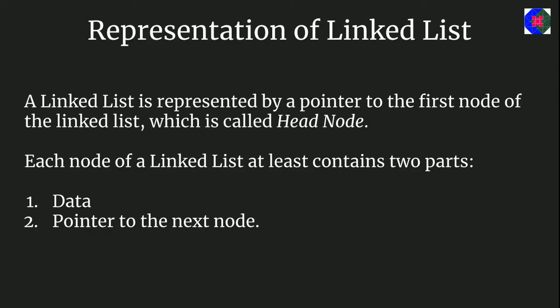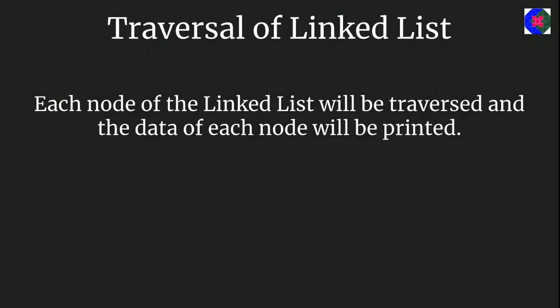A linked list is represented by a pointer to the first node, called the head node. Each node contains at least two parts: data and a pointer to the next node. We will shortly see how to create a linked list by coding. Traversal of a linked list is the process where each node is visited and the data field of each node is printed.